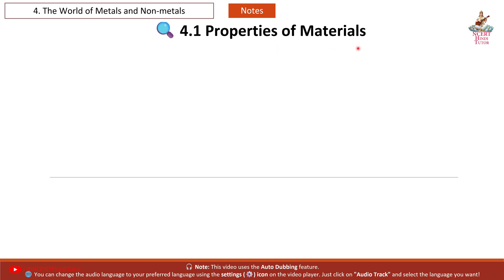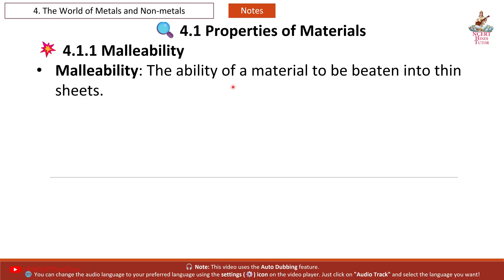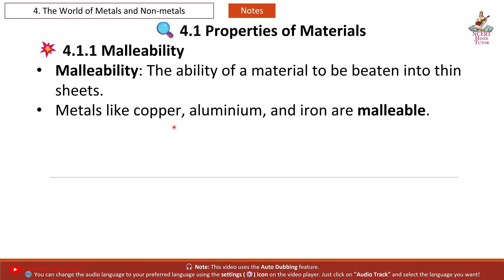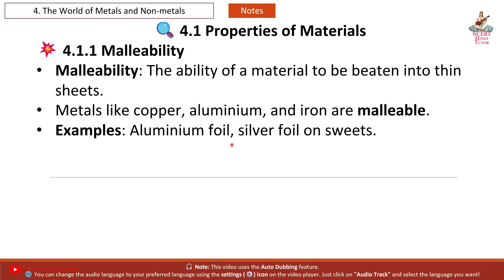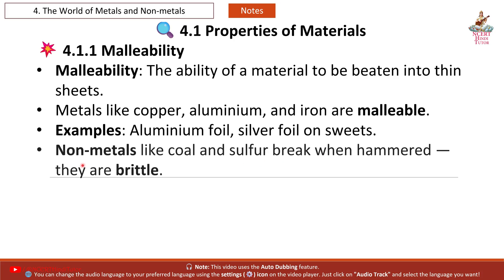4.1 Properties of Materials. 4.1.1 Malleability: the ability of a material to be beaten into thin shapes. Metals like copper, aluminium and iron are malleable — examples include aluminium foil and silver foil on sweets. Non-metals like coal and sulphur break when hammered; they are brittle.